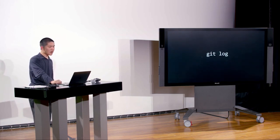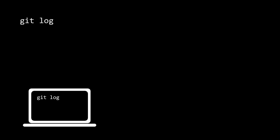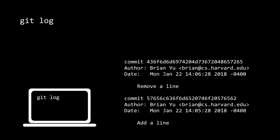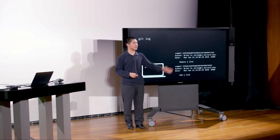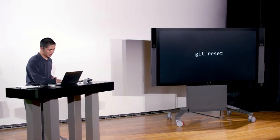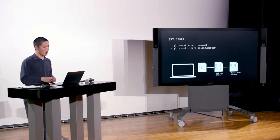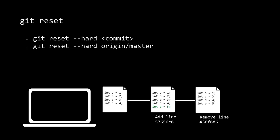A couple more useful commands: 'git log' shows you a history of all commits you've made. Running git log inside a repository shows a list of all different commits — each marked by a unique commit hash, who made the commit, when, and the description message. And 'git reset' lets you revert: 'git reset --hard' followed by a commit hash resets your whole repository back to that version. Likewise, 'git reset --hard origin/master' resets back to the version previously on GitHub — i.e., where you originally cloned it from.